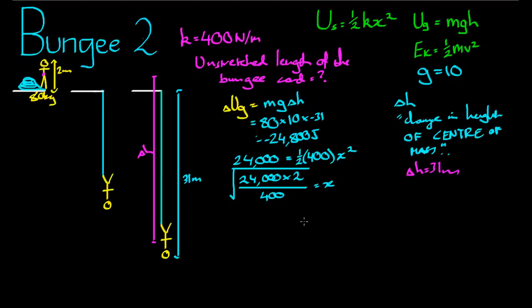X is equal to the square root of 24,000. Oops, sorry, it's not just 24,000, that's a mistake. It's 24,800. Excuse me there. So the square root of 24,800 multiplied by 2 divided by 400 comes to a total of 11.14 meters.